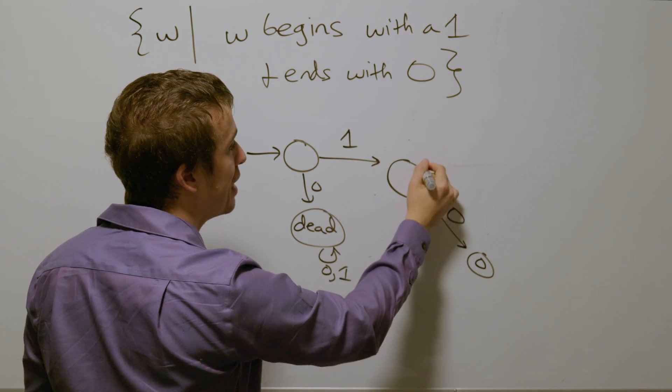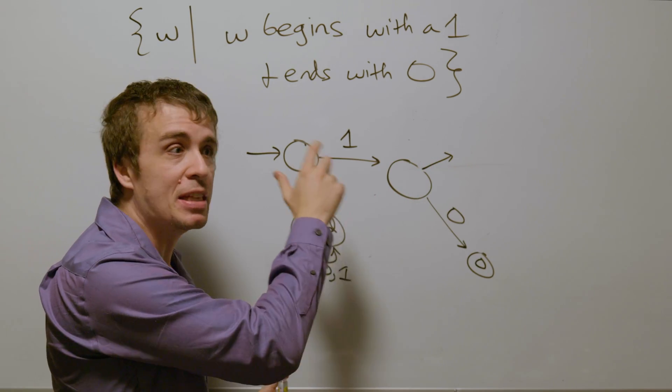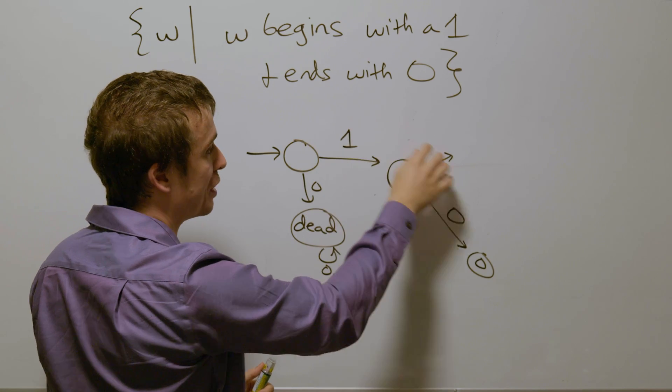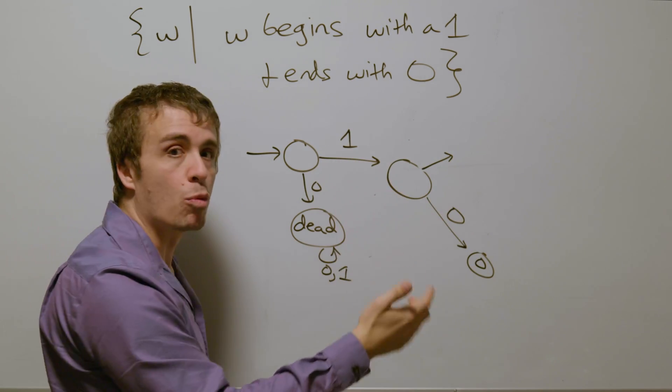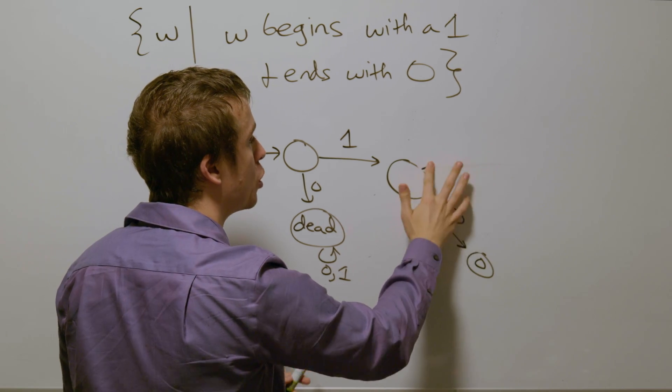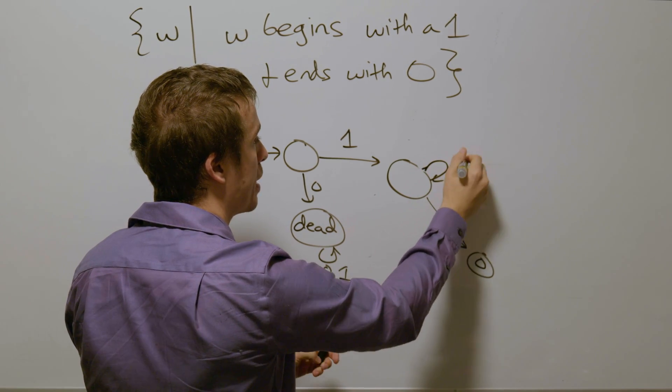So if we have a one in this state, that still doesn't satisfy this criterion of this language. And so we still are at the same place we were at before. So we should self loop on a one here.